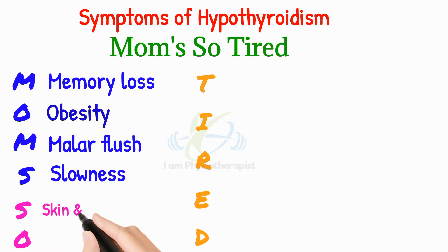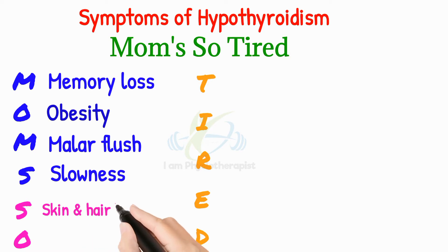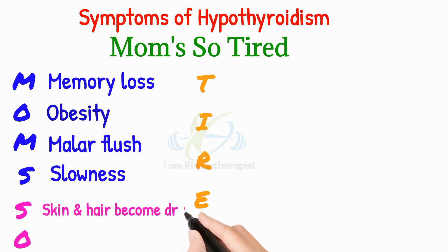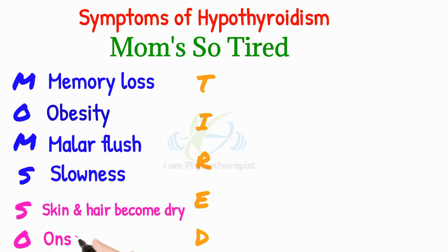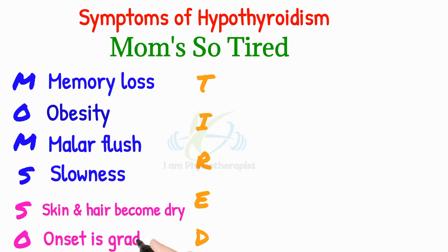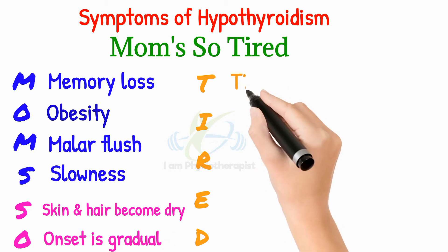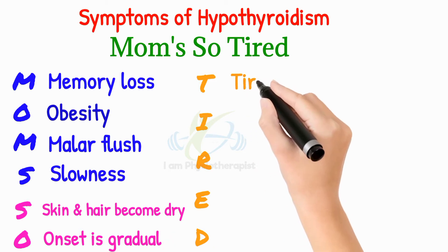S stands for skin and hair become dry. O stands for onset of hypothyroidism, which is gradual. T stands for tired.